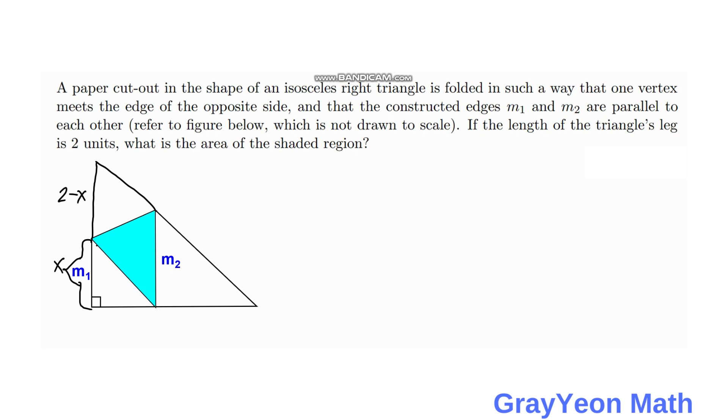And next we consider this isosceles right triangle, this small one. If that is an isosceles right triangle, then this should be x, then this length should be x square root of 2 for an isosceles right triangle.